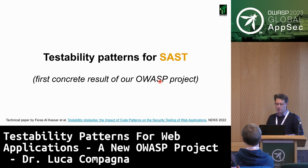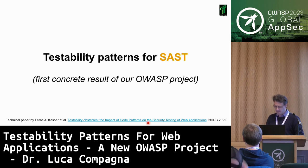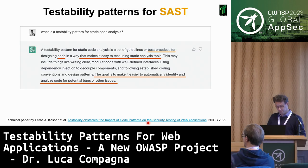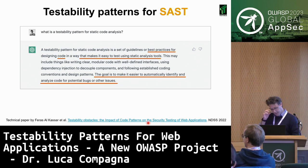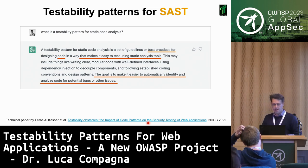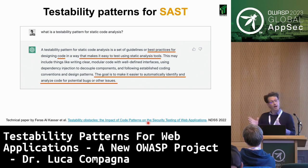I don't want to go into a formal definition of what testability patterns are — I prefer to present some examples. If you want technical details, you can go to the paper and find the technical information. Or you can ask ChatGPT — it's something we tried. We asked it about testability patterns for SAST, and it replied with something like 'best practices for code that makes it easy to test using static analysis tools, to automatically identify and analyze code for potential bugs.' The definition is not so far from what we want.